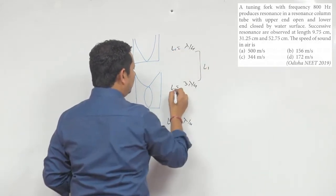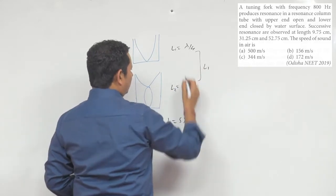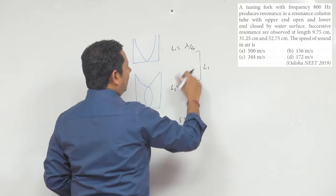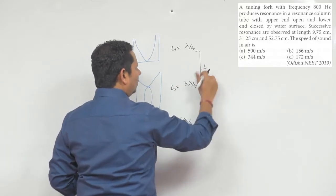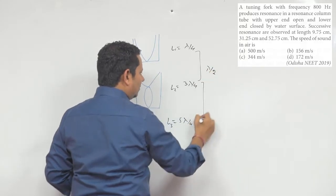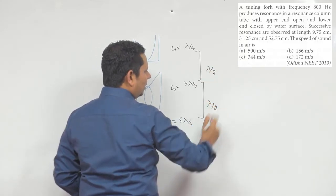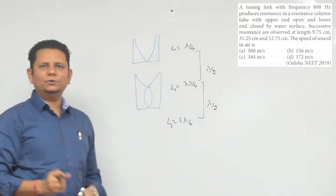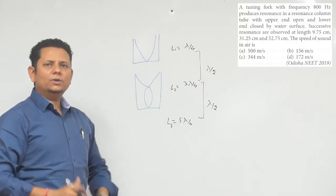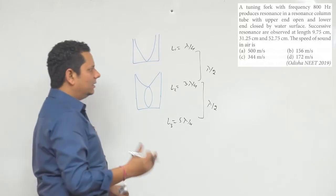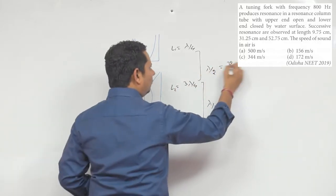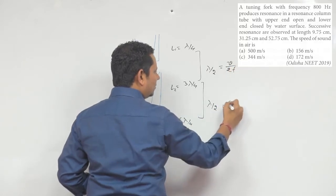So this is equal to lambda by 3. If you see, the difference is lambda by 2. Similarly, the difference is lambda by 2.